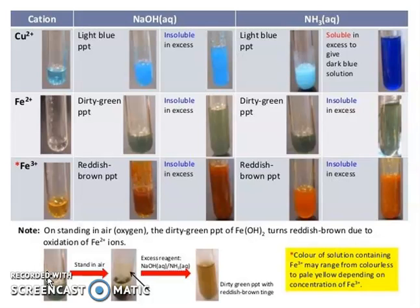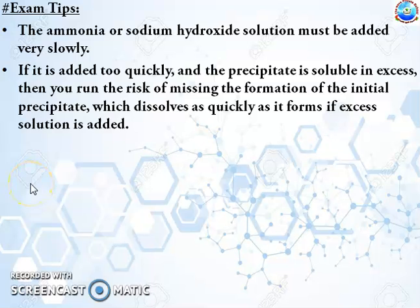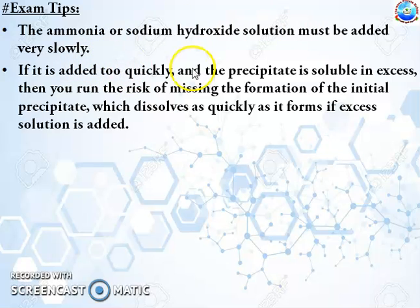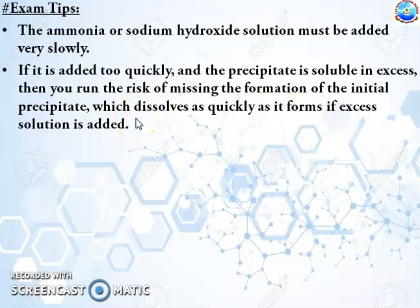Before the test for cations, here are some exam tips. The ammonia or sodium hydroxide solution must be added very slowly. If we add too quickly, the precipitate which is soluble in excess dissolves quickly, and you run the risk of missing the formation of the initial precipitate, which resolves as quickly as it forms if excess solution is added. You have to put the solution of ammonia or sodium hydroxide slowly, drop by drop.